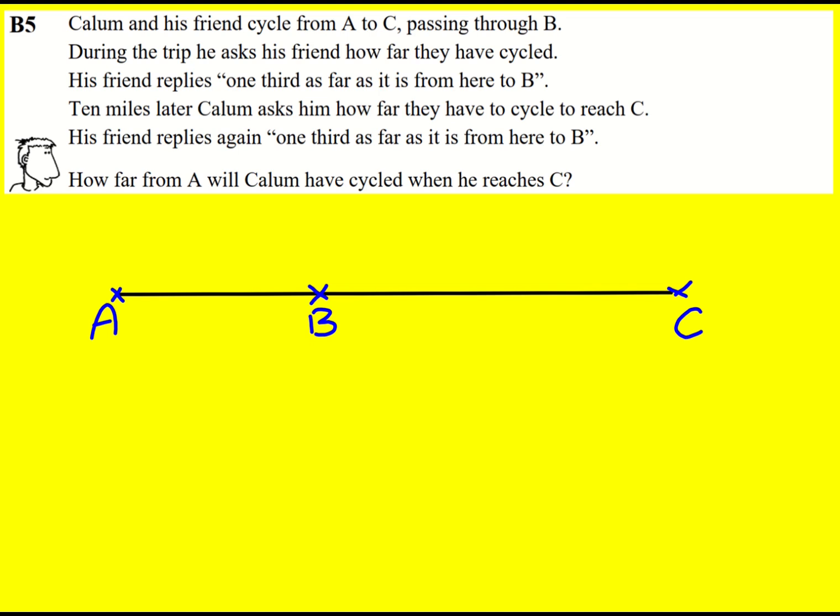During the trip Callum asks his friend how far they've cycled and his friend replies one-third as far as it is from here to B. Then 10 miles later Callum asks him how far they have to cycle to reach C and he again says one-third.